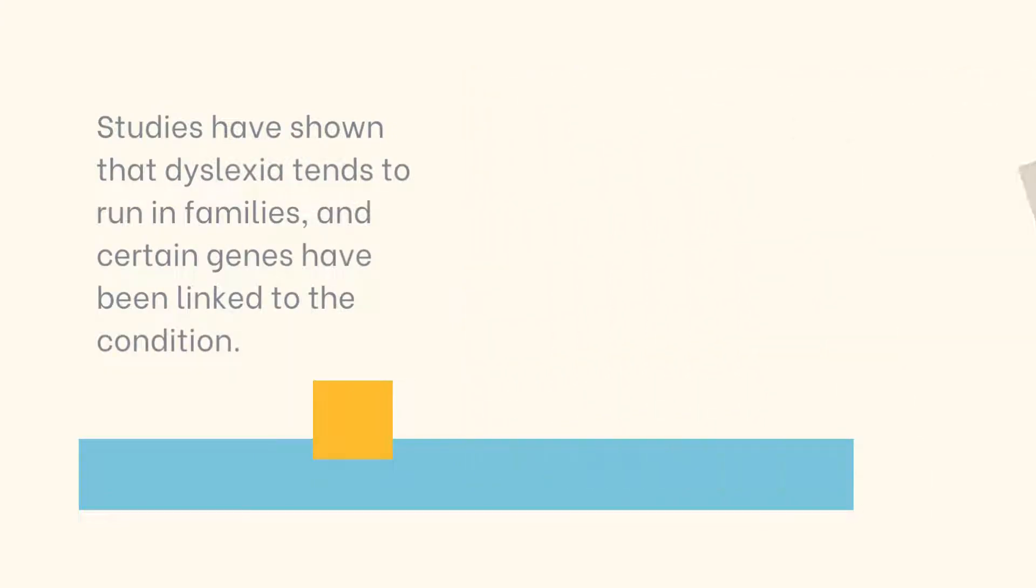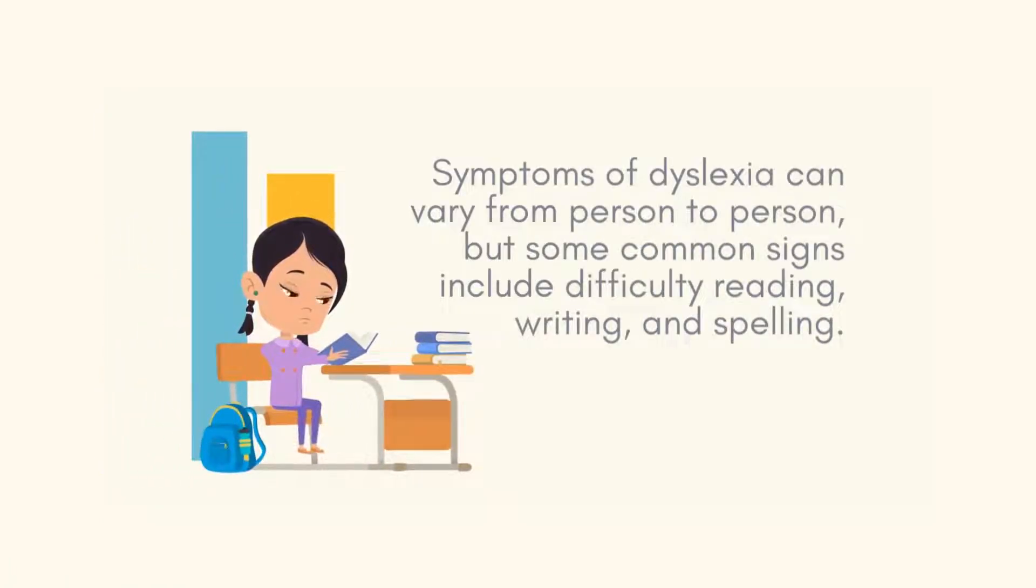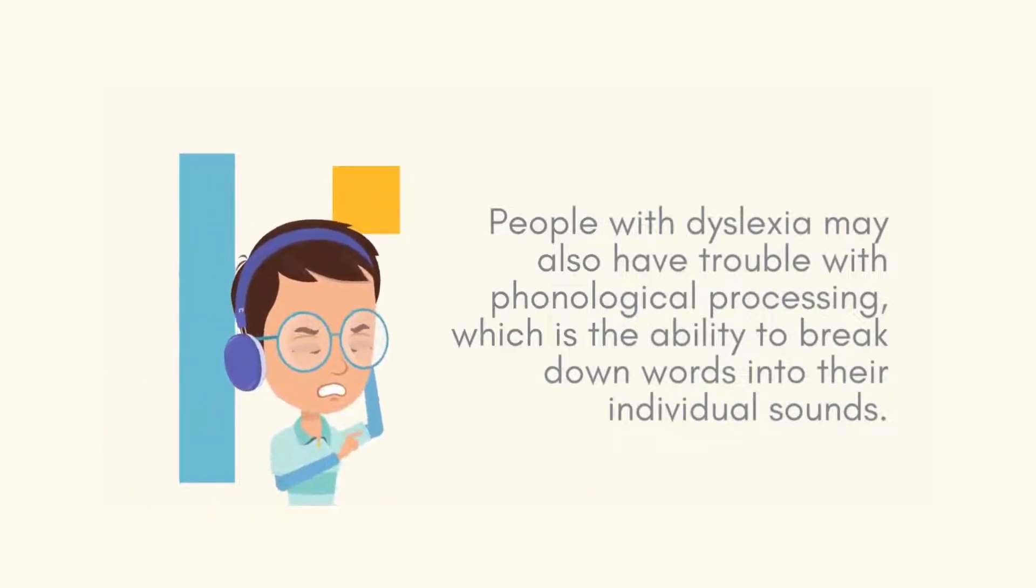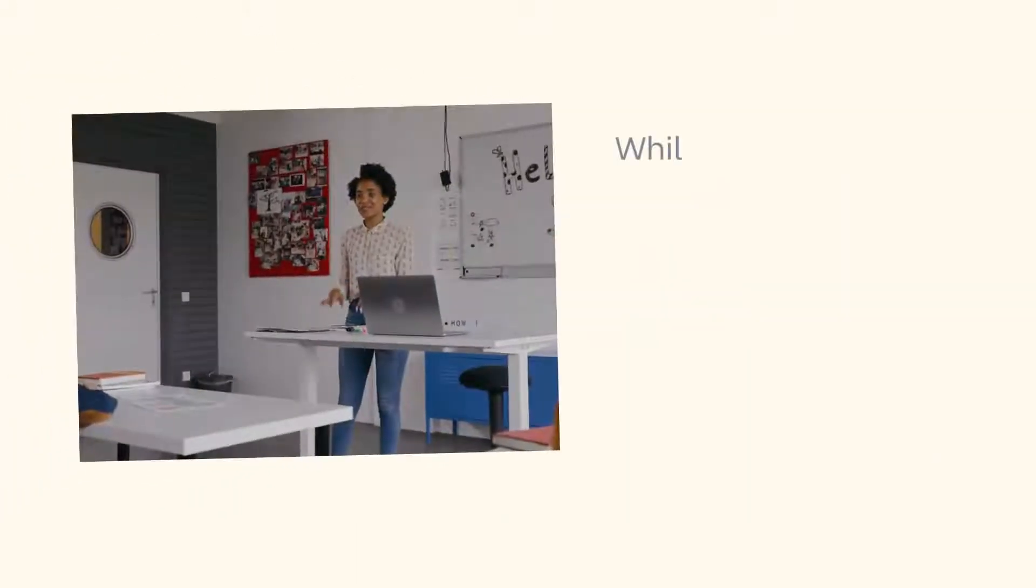Symptoms of dyslexia can vary from person to person, but some common signs include difficulty reading, writing, and spelling. People with dyslexia may also have trouble with phonological processing, which is the ability to break down words into their individual sounds. They may also struggle with memory, organization, and time management.